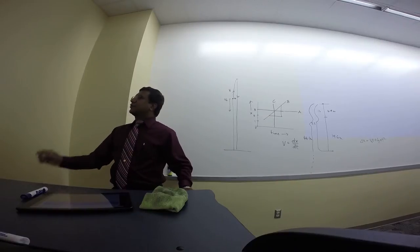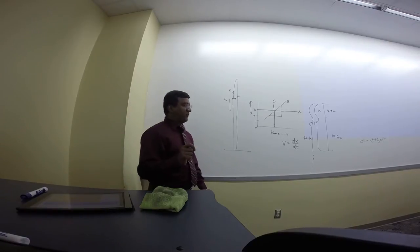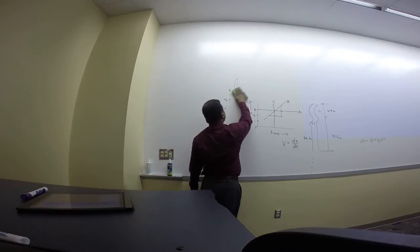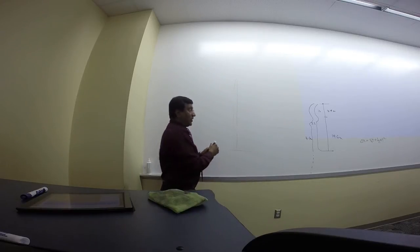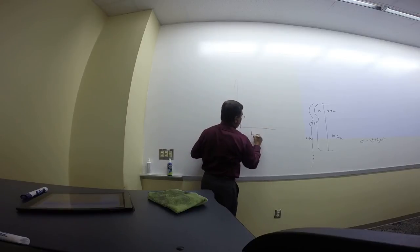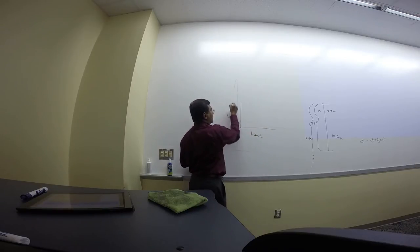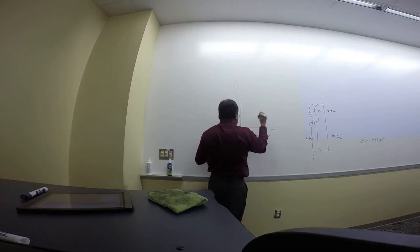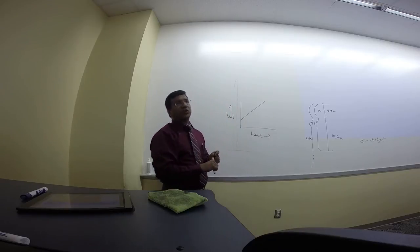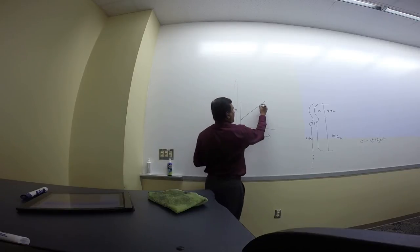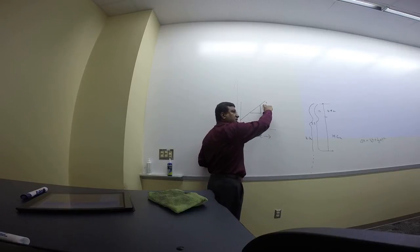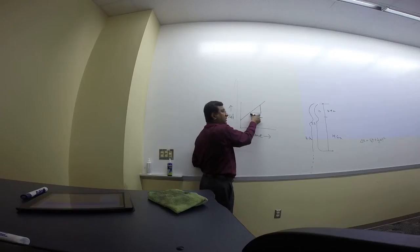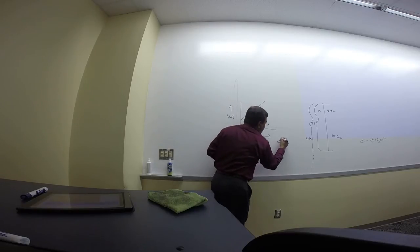Question four: the slope of the line connecting two points on a velocity-time graph. The answer: average acceleration. On a v-t graph with time on x and velocity on y, the slope is dy/dx = change in velocity divided by change in time. Change in velocity divided by change in time is acceleration.